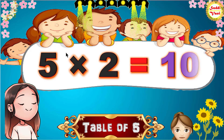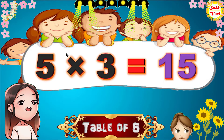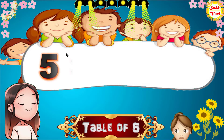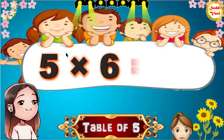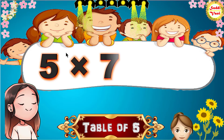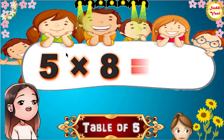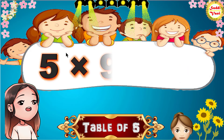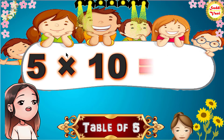5 2s are 10, 5 3s are 15, 5 4s are 20, 5 5s are 25, 5 6s are 30, 5 7s are 35, 5 8s are 40, 5 9s are 45, 5 10s are 50.